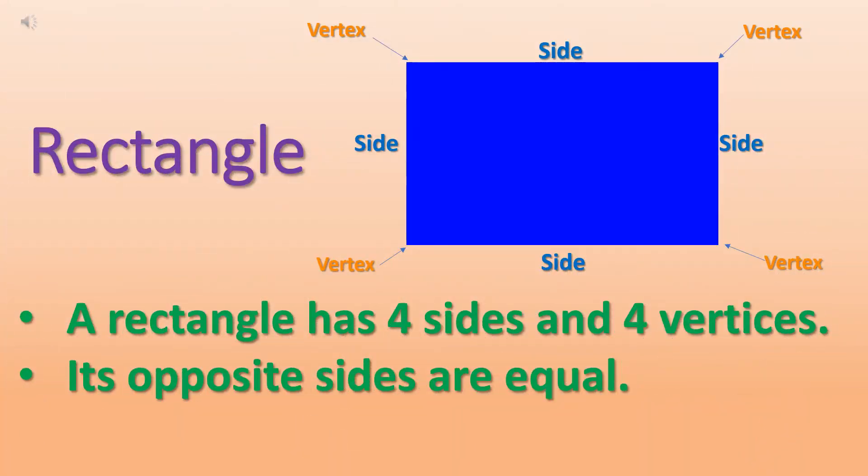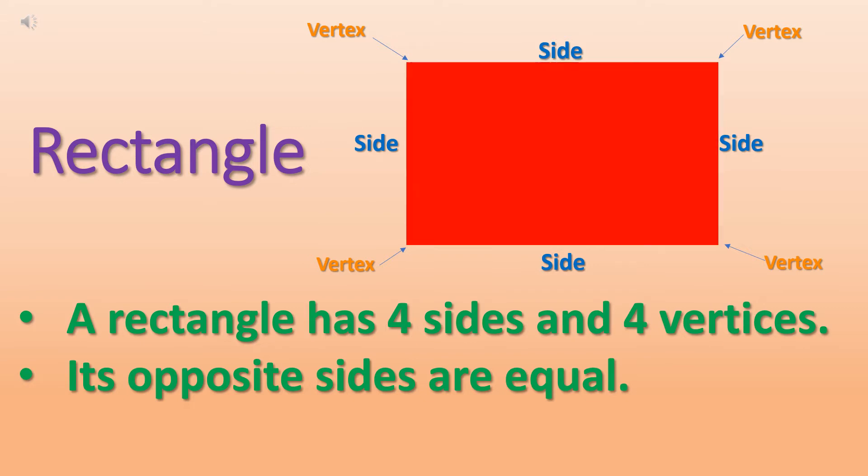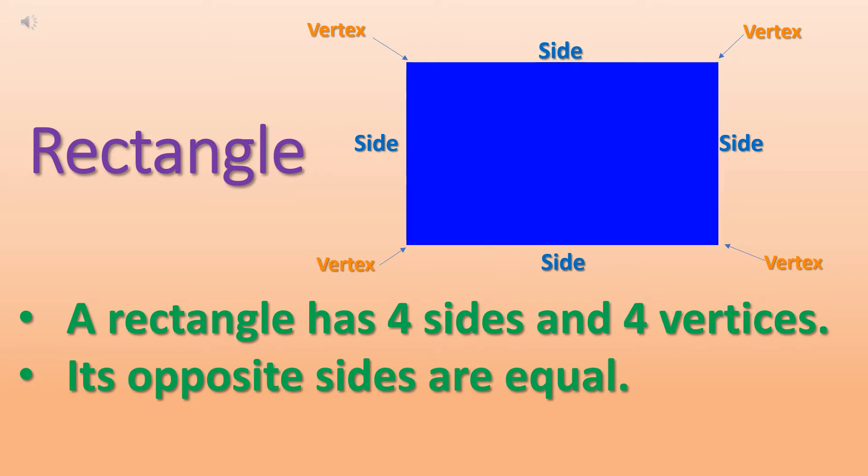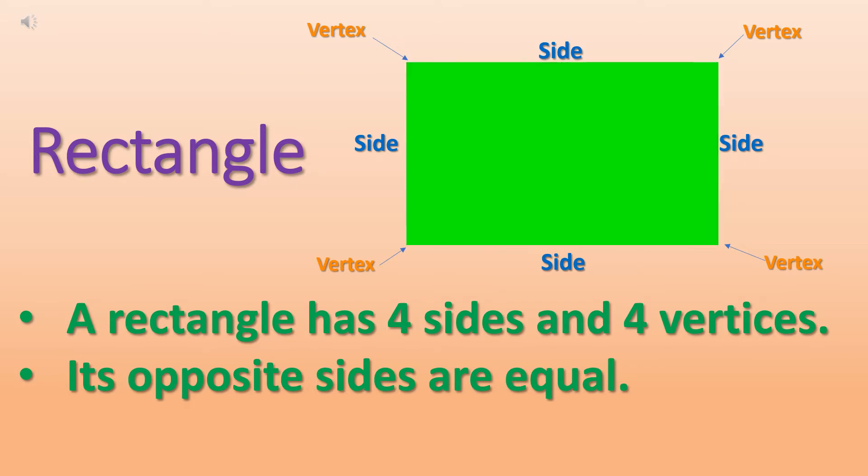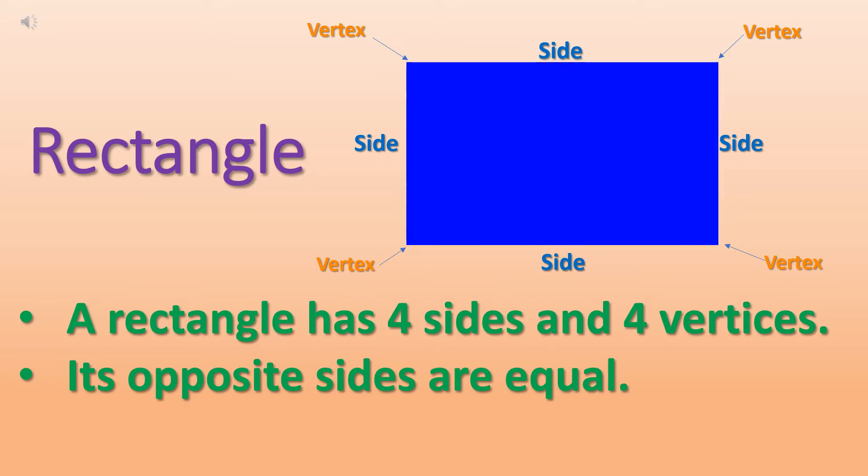Now let's learn more about these 2D shapes. First of all, let's take rectangle. As you can see, a rectangle has 4 sides and 4 vertices. You can see in this picture which are sides and which are vertices.